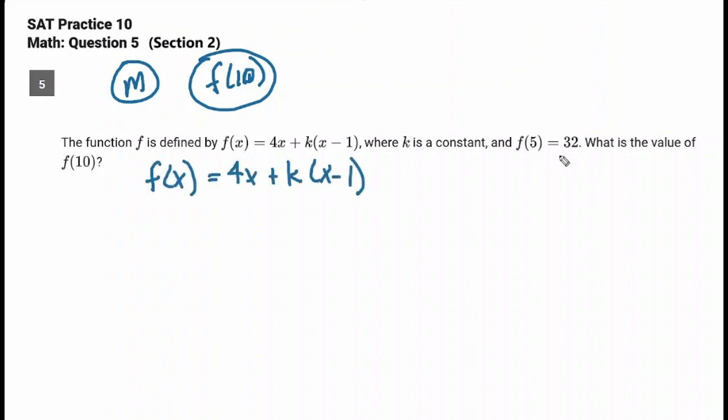f(5) is 32, so what you've got to do is every time you see an x, you're going to put in a 5. 4 times 5, what's that? That's 20, plus k (we don't know what that is) times 5 minus 1, that's 4. What's that supposed to equal? 32.